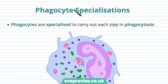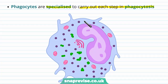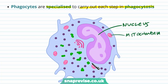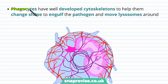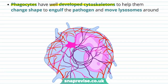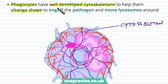In order for a phagocyte to carry out all of these things, it has to be specialized for each step in phagocytosis. One of the adaptations is that phagocytes have a well-developed cytoskeleton — the cytoskeleton is basically the skeleton of the cell, with lots of different fibers and filaments running across it in various directions. This helps them to change shape so they can engulf pathogens and move lysosomes around. Having a dense cytoskeletal network helps the cell move its cytoplasm and membrane into complicated shapes, and lysosome vesicles also move around the cell on these fibers as a kind of traffic network.